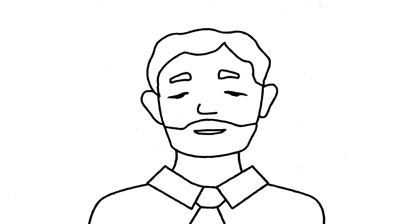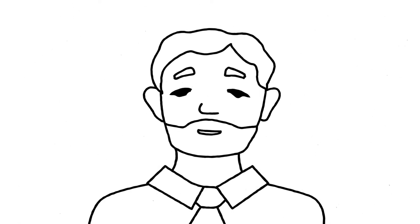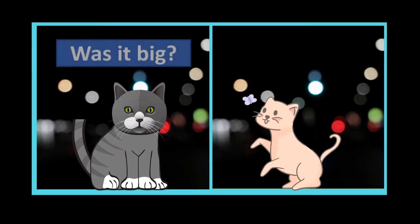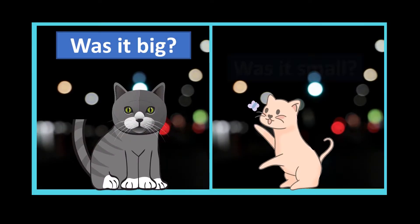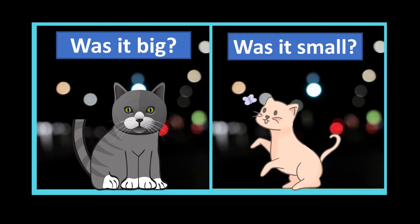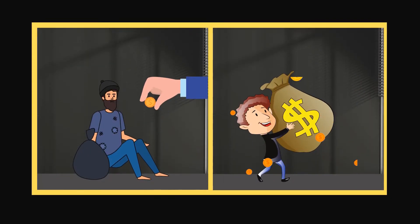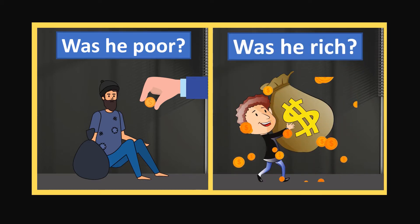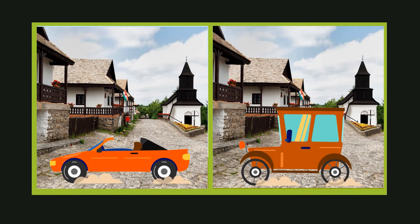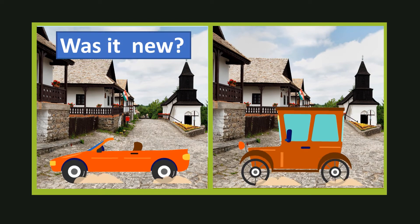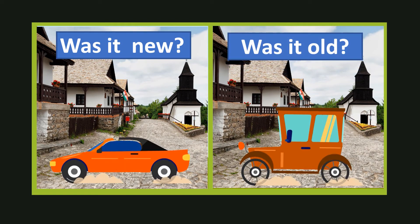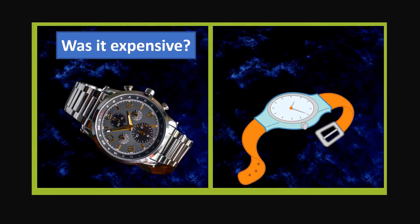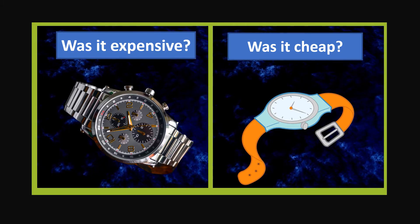Utilizando el verbo to be, también podemos hablar de adjetivos calificativos. Por ejemplo: Was it big? Was it small? Was he poor? Was he rich? Was it new? Was it old? Was it expensive? Was it cheap?